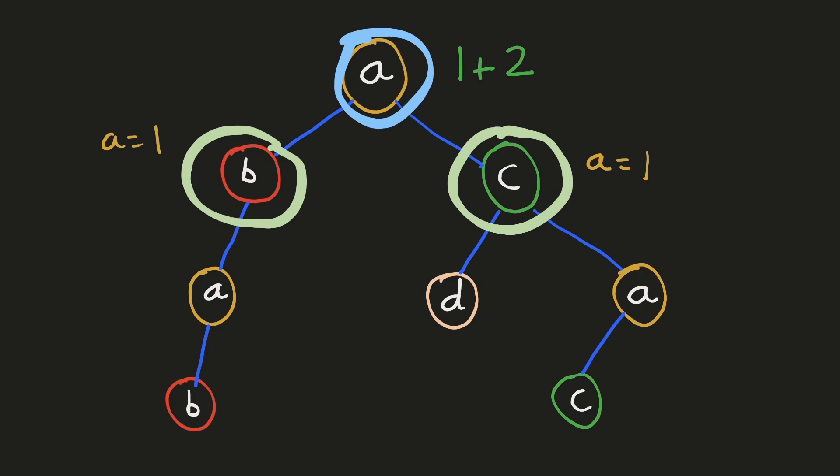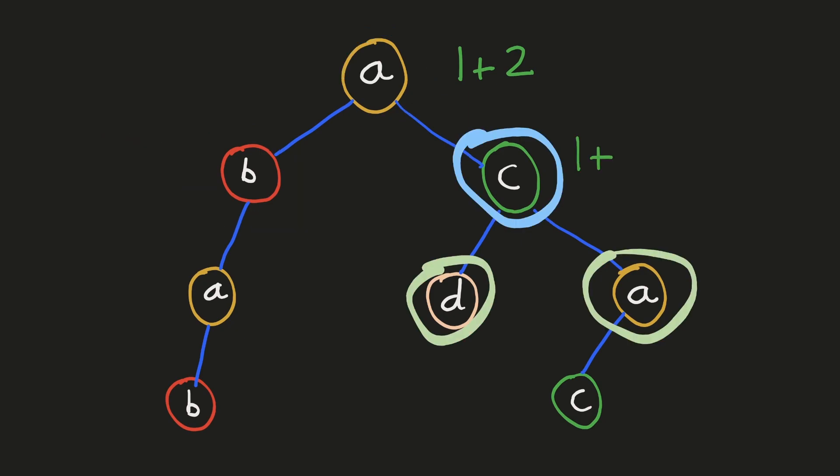We can do the same thing for each and every node, starting from that node and checking all nodes in their subtrees to find the same label. For example, when calculating the result for this node, we calculate the occurrence of 'C' in both child subtrees and add it to 1. The time complexity of this would be O(n²) because we have to start from each node and check all the nodes in its subtrees. Let's see if we can cut down some repetitive work.